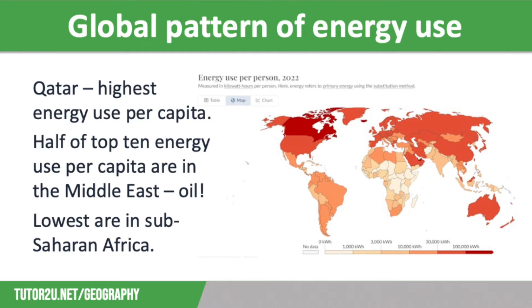Oil is the greatest source of energy supplied globally, accounting for about 30% of all energy produced. This is down from 50% in the 1970s.